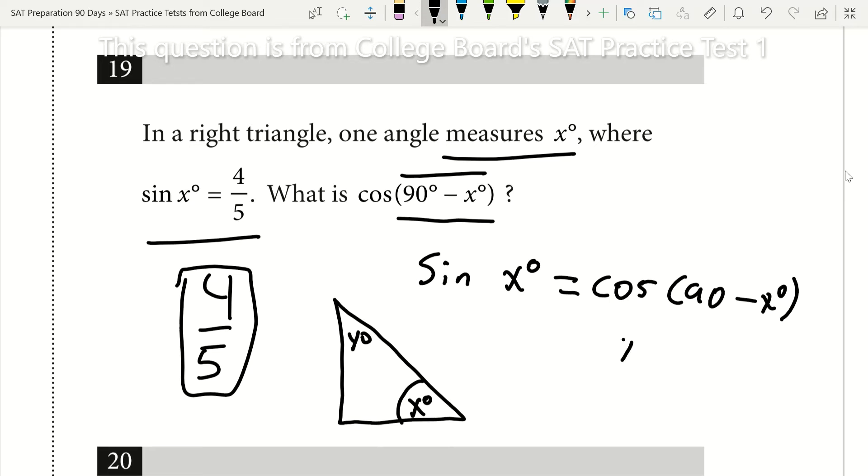Well that angle y, since this is a right angle right here, that angle y has to equal 90 minus the angle x. Since angle x plus angle y must equal 90, therefore angle y must equal 90 minus the angle x.